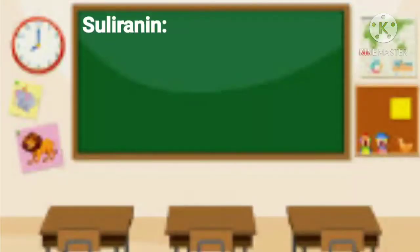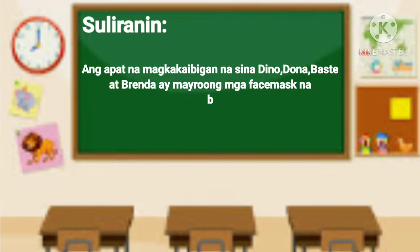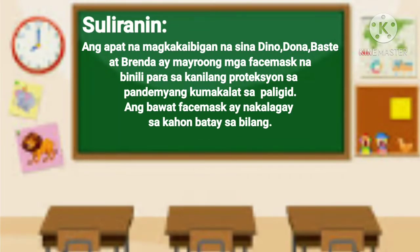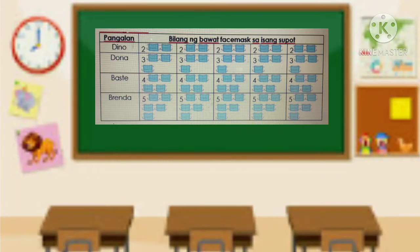Narito ang suliranin. Makinig ng mabuti at ito'y aking babasahin. Ang apat na magkakaibigan na si Nadino, Donna, Baste at Brenda ay mayroong mga face mask na binili para sa kanilang proteksyon sa pandemyang kumakalat sa paligid. Ang bawat face mask ay nakalagay sa kahon batay sa bilang. Narito ang bilang ng bawat face mask sa kanilang kahon. Si Dino ay mayroong tigdalawang face mask sa bawat kahon. Si Donna ay mayroong tigtatatlo. Si Baste naman ay mayroong tigaapat. At si Brenda ay mayroong tiglilima sa bawat kahon.